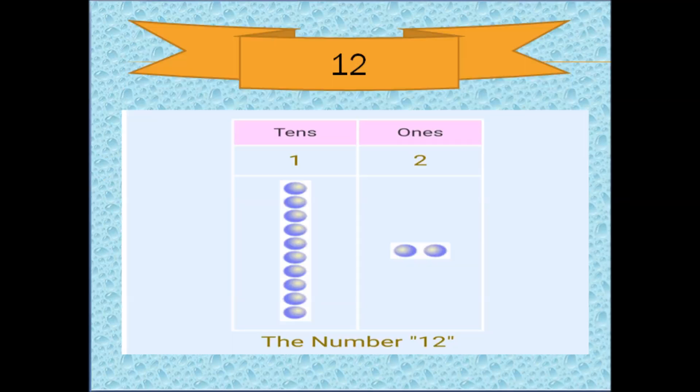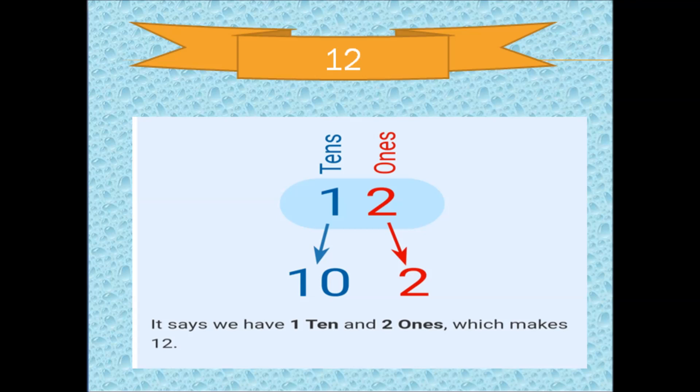So for example, if we have to write 12, we know 10 plus 2 is equal to 12. So in the 1s place, we will write 2 and in the 10s place, we will write 1. So the number 12 says that we have 1 ten and 2 ones.